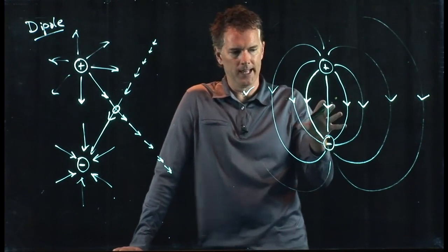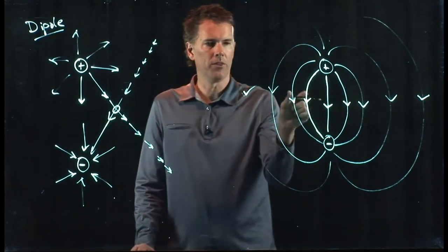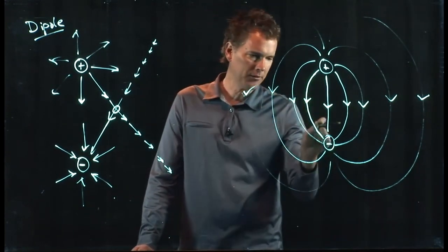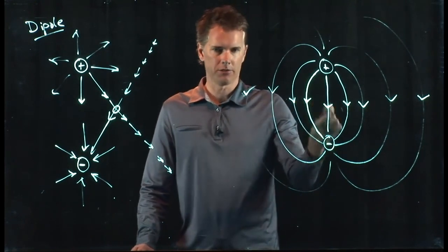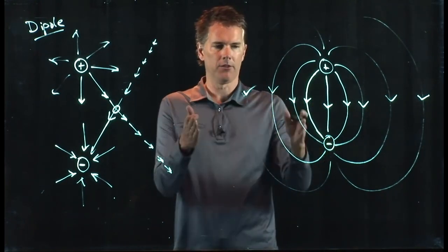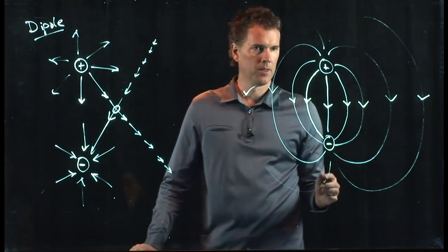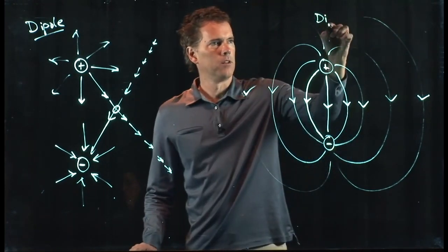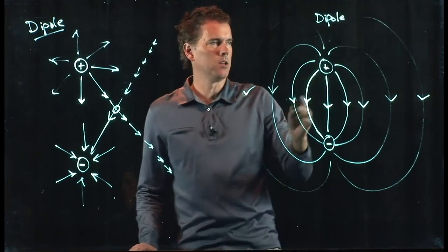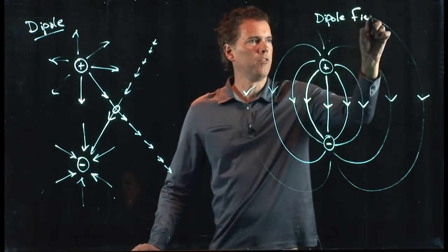The strength of the electric field has to do with the density of the lines. If the lines are close together, the field is strong. If the lines are far apart from each other, they're very weak. So this is another representation of the dipole field.